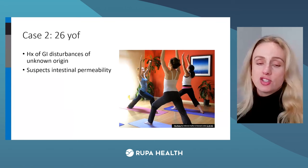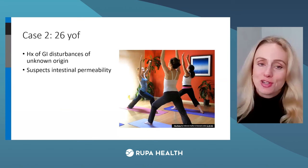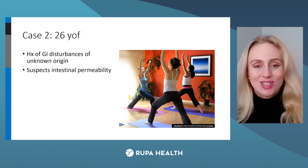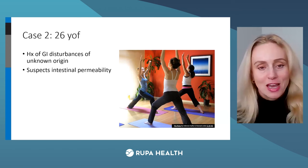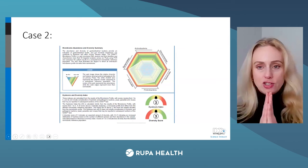Our second case is a 26-year-old female with a similar presentation — history of GI disturbances of unknown origin. It looks the same, but are we going to treat them the same because they present the same? No, we're going to look at the GI 360. This patient suspects intestinal permeability — she's heard about leaky gut, which is a popular terminology today.